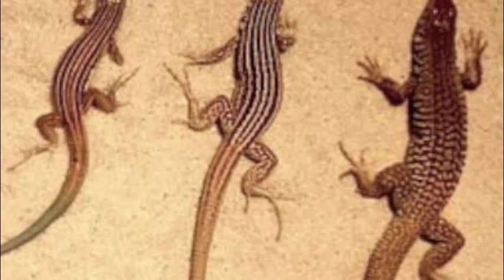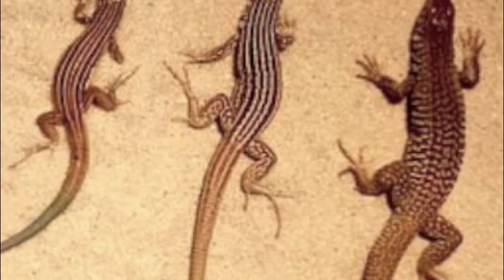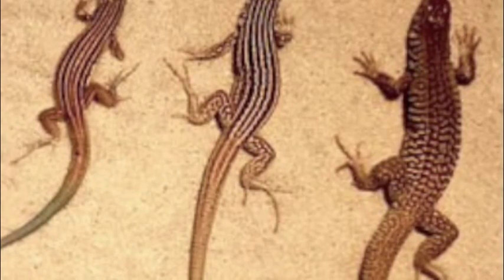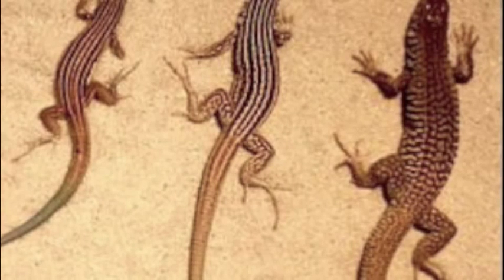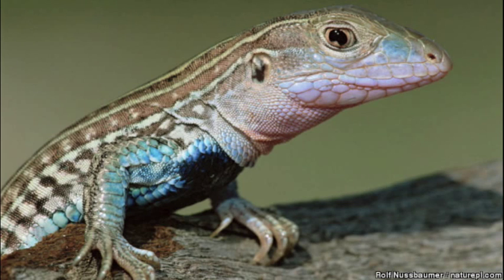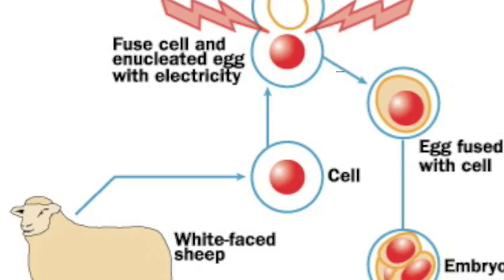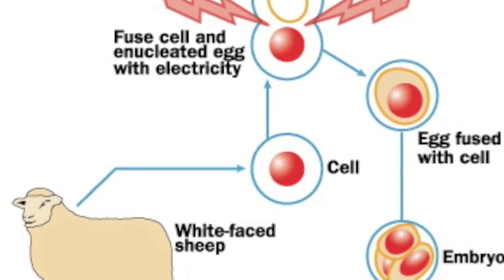Like all asexual reproduction methods, parthenogenesis has the advantage of reproducing without a male, but has little variation in its offspring. It is different from cloning because unlike cloning, which receives injection to fertilize the egg, parthenogenesis is self-fertilized because everything is in the egg itself.